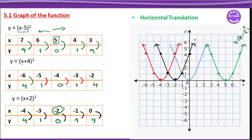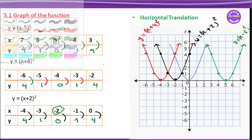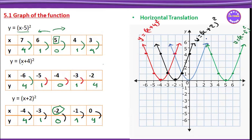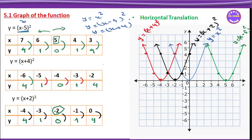y equals x plus 2, the whole square. y equals x plus 4. y equals x plus 4, the whole square. y equals x squared — that is the base graph. So we have y equals x squared as the original parabola, then y equals x minus 5, the whole square; y equals x plus 4, the whole square; and y equals x plus 2, the whole square.